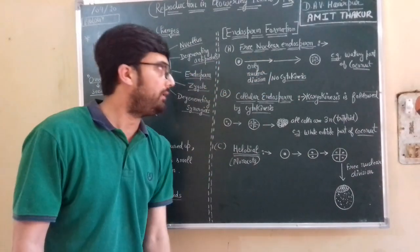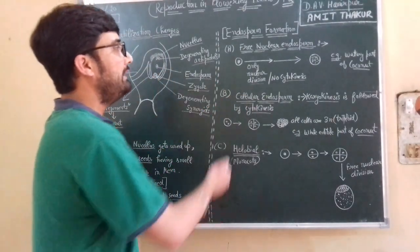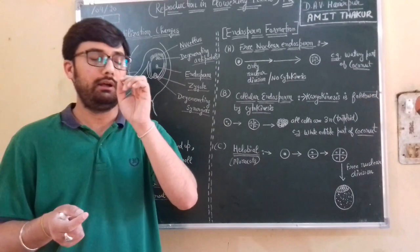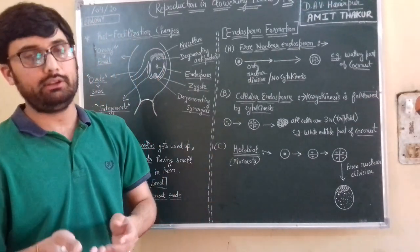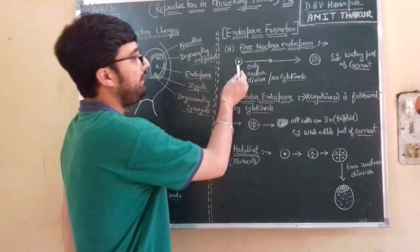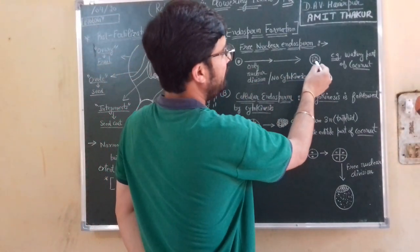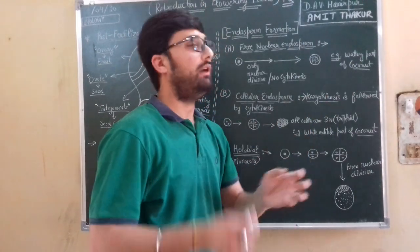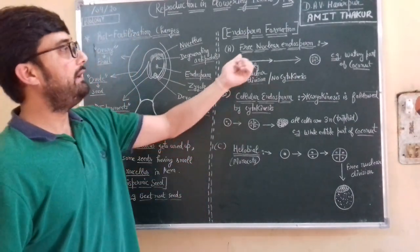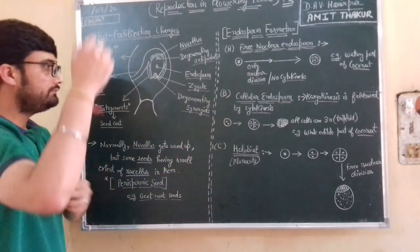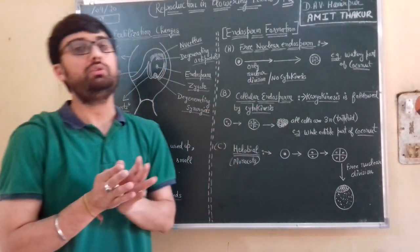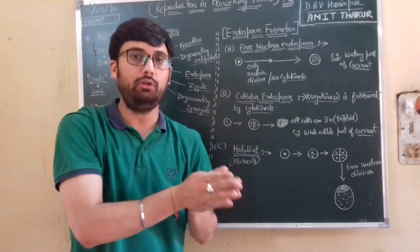Now let's come to endosperm formation. There are three kinds. First is free nuclear endosperm: in free nuclear endosperm, the nucleus undergoes only karyokinesis — only nuclear division — there is no cytokinesis or cytoplasmic division. Only nuclear division takes place. These nuclear bodies are free. For example, the watery part of coconut is free nuclear endosperm.